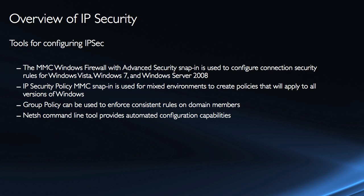What tools do we have in Windows Server 2008 to utilize IP security? The Windows Firewall with Advanced Security snap-in for the MMC is the primary utility now. It's used to create and configure connection security rules for Windows Vista, Windows 7, and Windows Server 2008. One of the nice enhancements of the firewall is that IPsec has been completely integrated into it. In the past, you had to use the IP Security Policy MMC snap-in or group policies to manage IPsec and the firewall separately. Now you can manage it all together. Both are also available in a Group Policy Object.